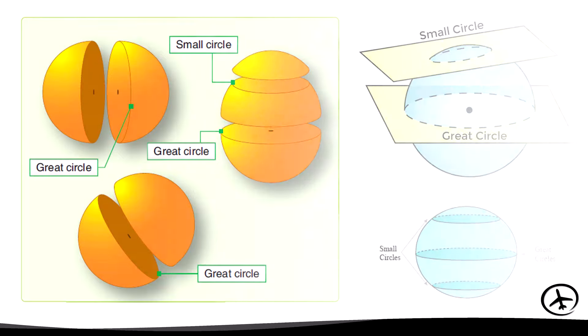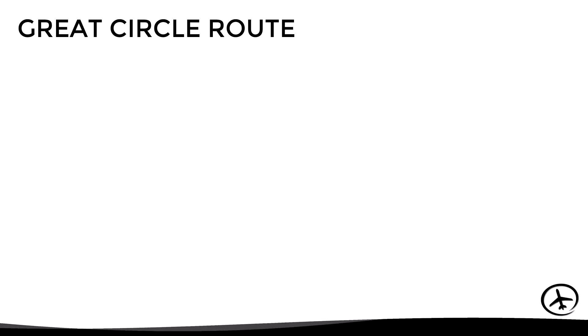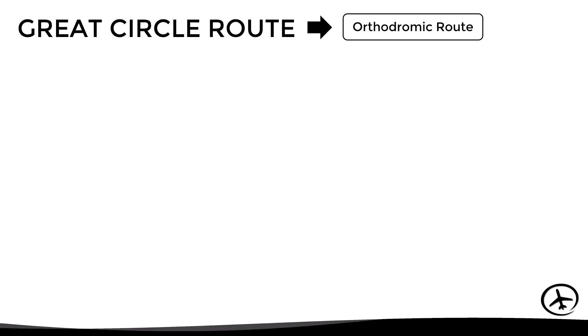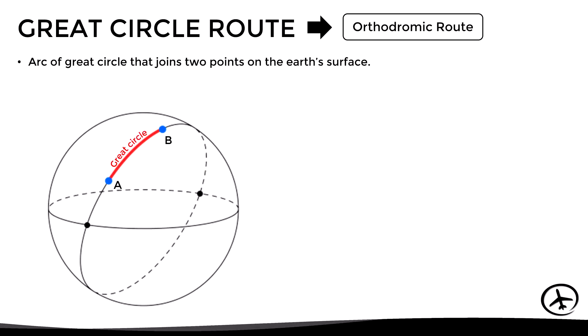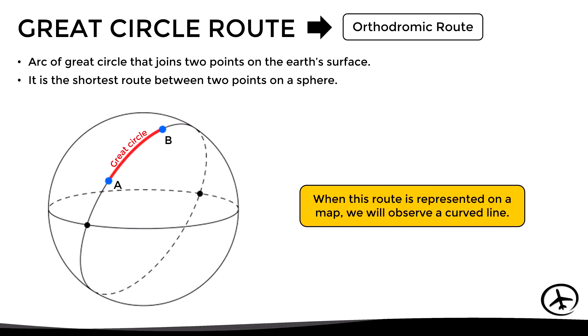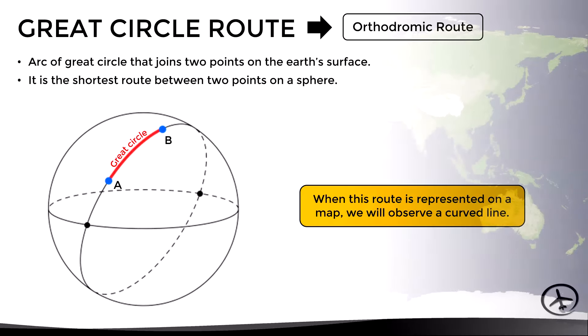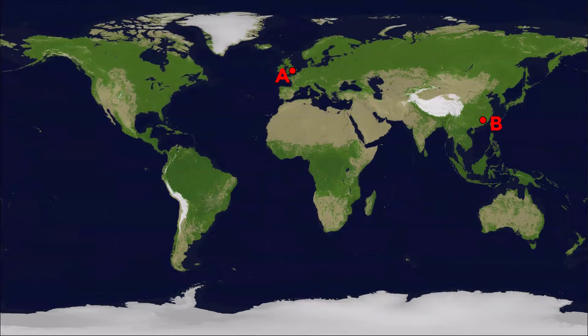Having understood these concepts, a great circle route — also known as an orthodromic route — is an arc of a great circle that joins two points on the Earth's surface, and by definition it is the shortest route between two points on a sphere. This may seem obvious if we look at a three-dimensional representation of a sphere.